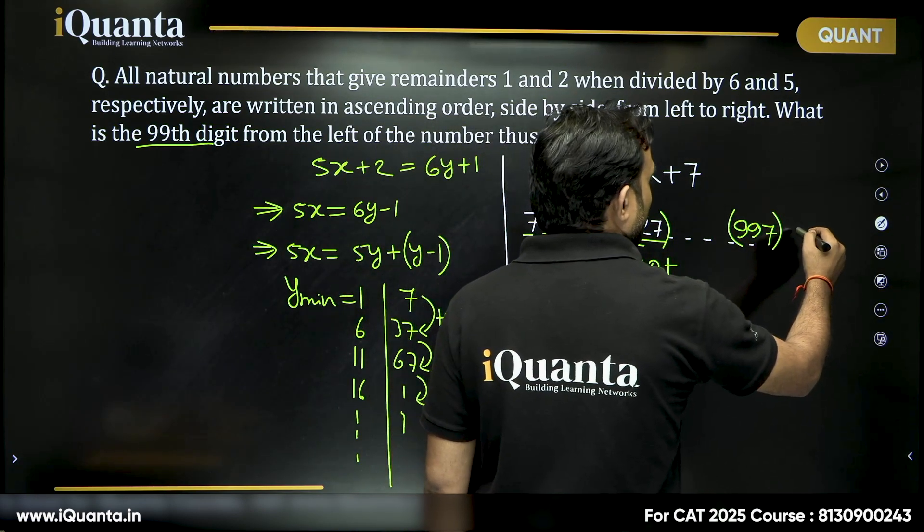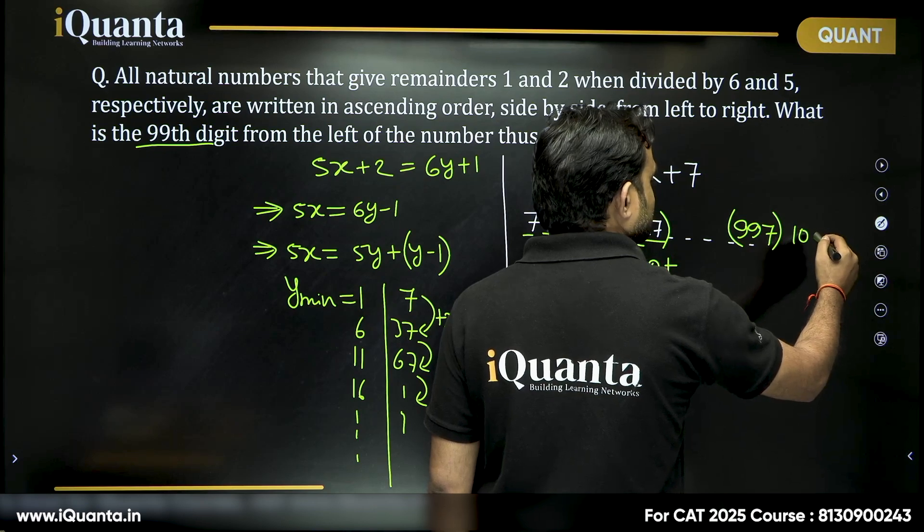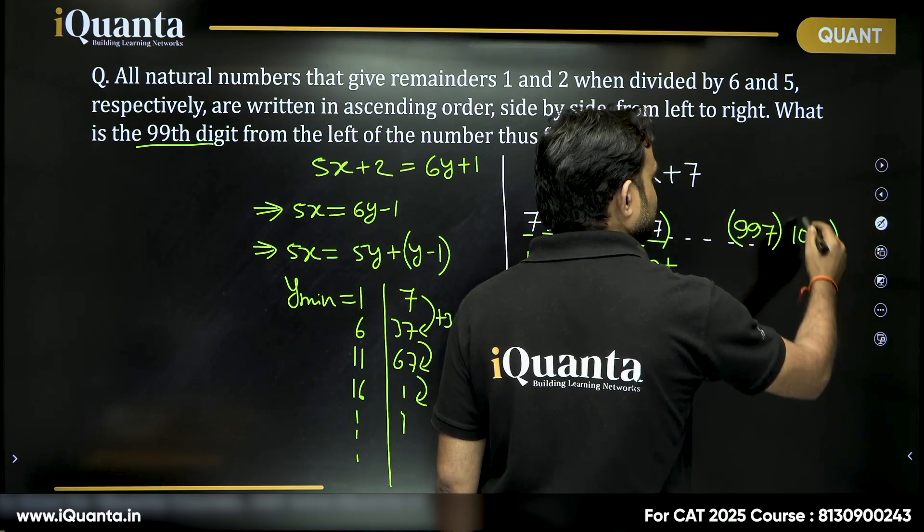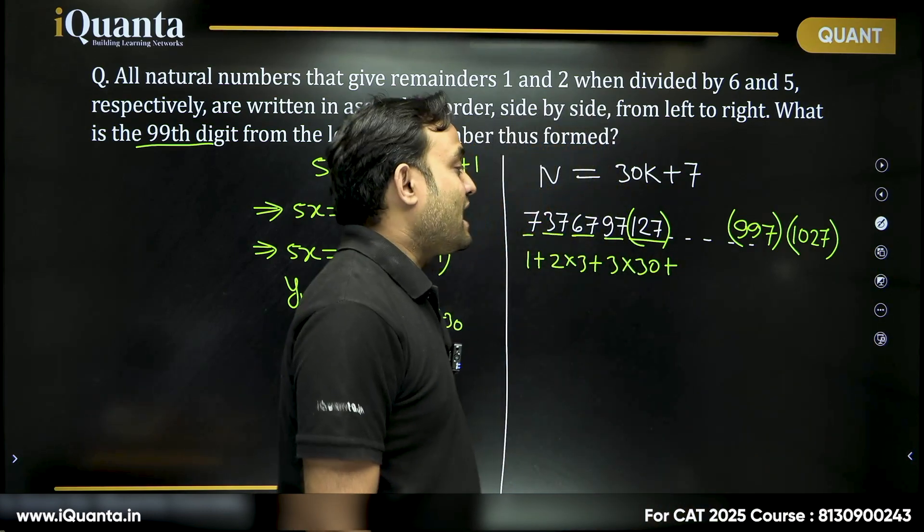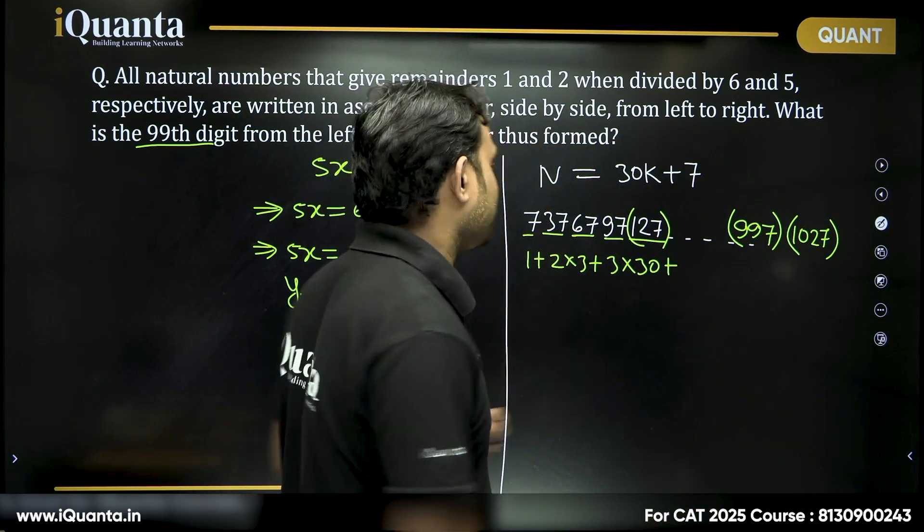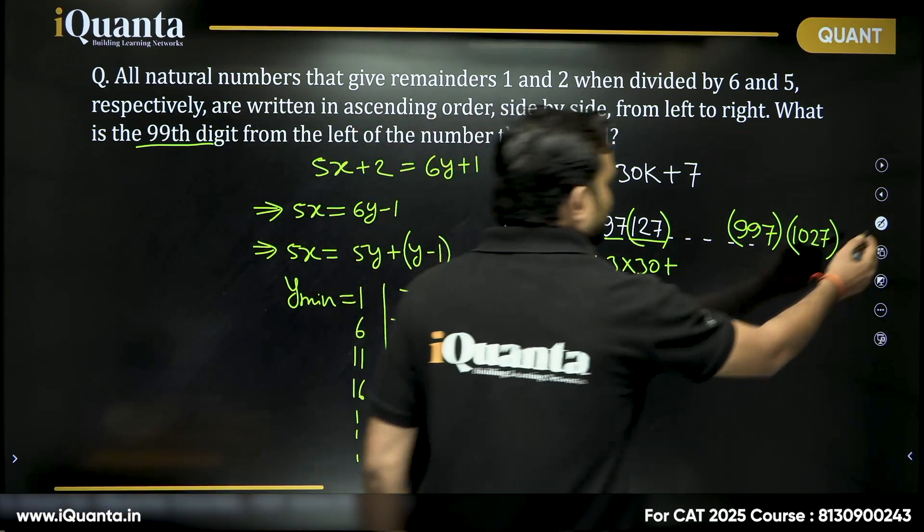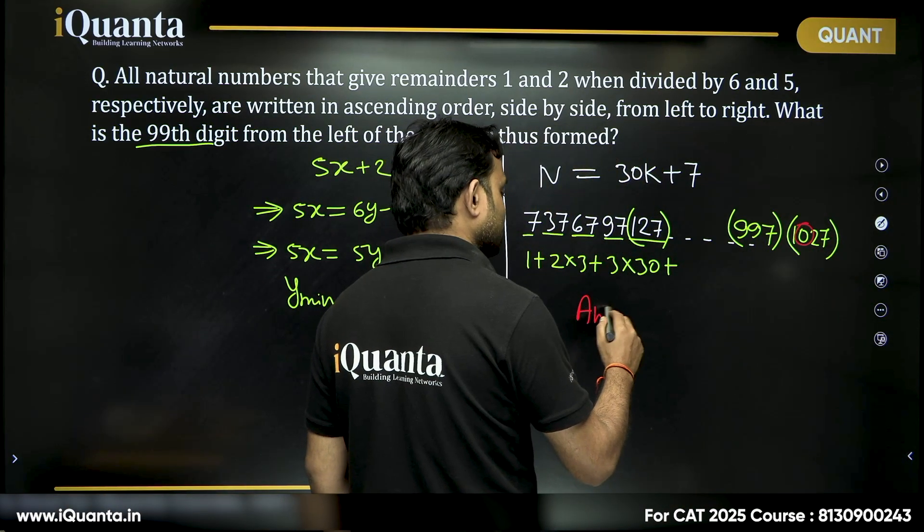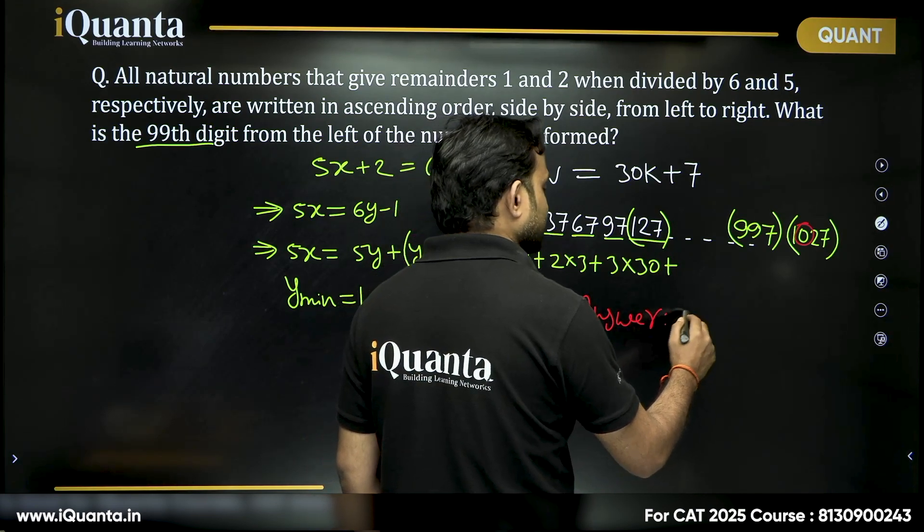Now the smallest 4-digit number will be, if you add 30 to this, means 1027. This will be the smallest 4-digit number and now we are going to take second digit from here. So the second digit from here is nothing but 0. So what is our answer here? Answer is 0.